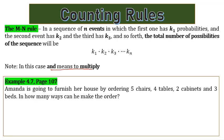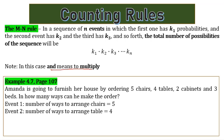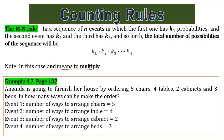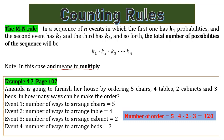Example 4.7, page 107: Amanda is going to furnish her house by ordering five chairs, four tables, two cabinets, and three beds. In how many ways can she make the order? Event 1: chairs = 5, Event 2: tables = 4, Event 3: cabinets = 2, Event 4: beds = 3. The total number of orders = 5 × 4 × 2 × 3 = 120 ways.